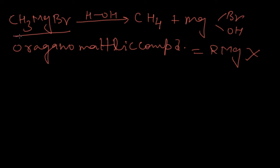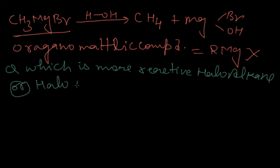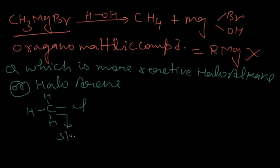In the next part we will do the chemical reactions of haloalkene and haloaryne, but first one more question: which is more reactive — haloalkane or haloalkene? In haloalkane, the carbon is sp3 hybridized. sp3 hybridization means its s-character is 25% and its bond length is 1.82 Å.